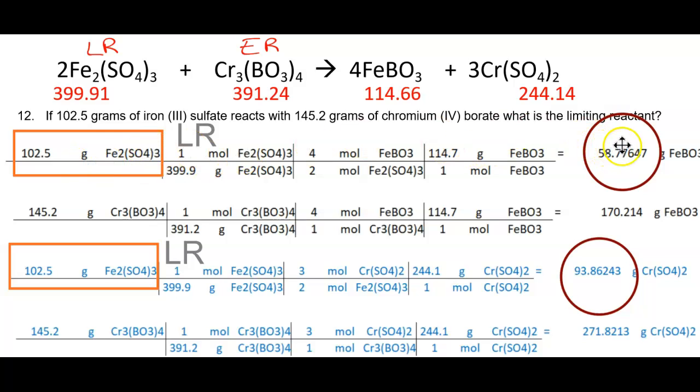Iron sulfate produces the least amount here, and iron sulfate also produces the least amount of chromium sulfate. So my limiting reactant is this reactant right here, as proven by the fact that the limiting reactant is whichever reactant produces the least amount.